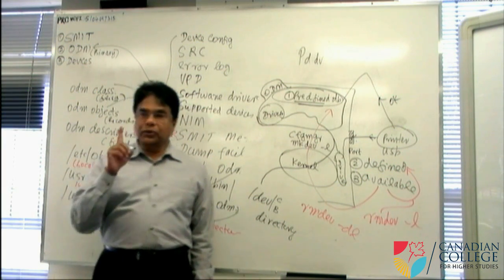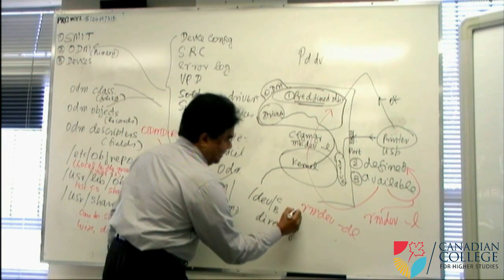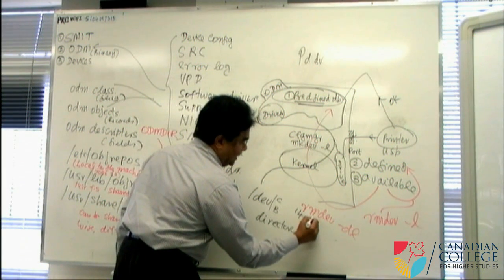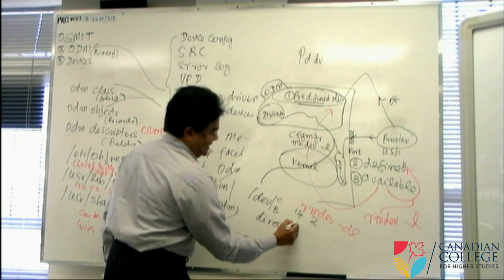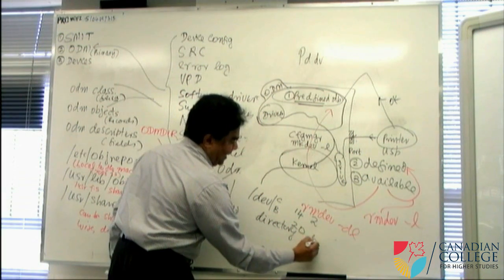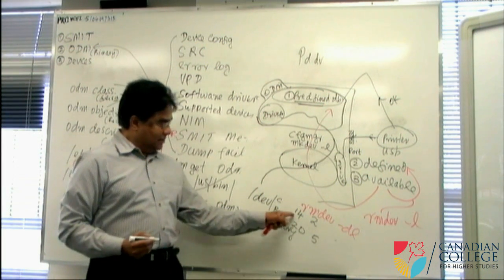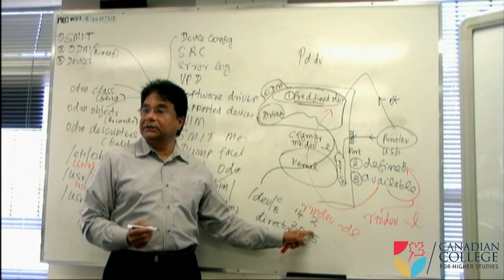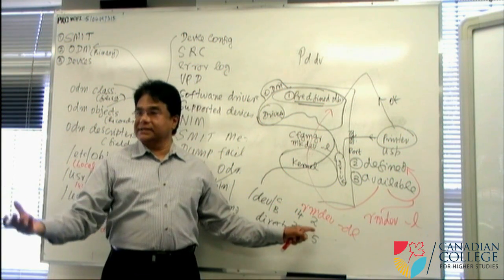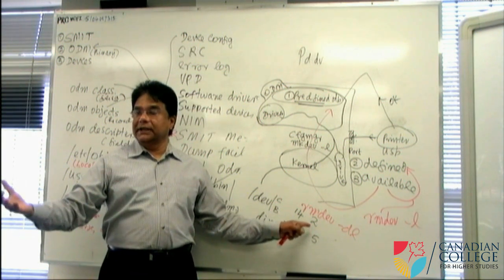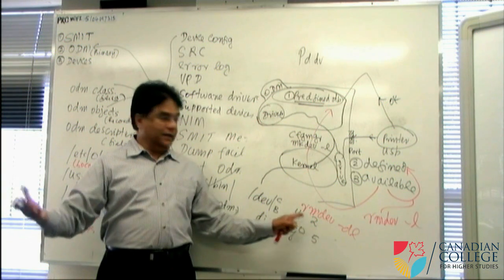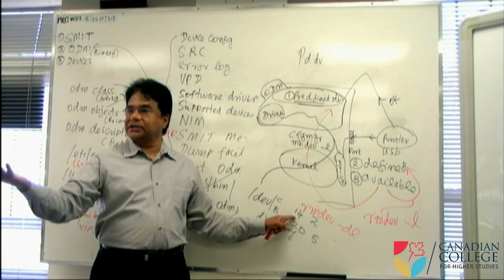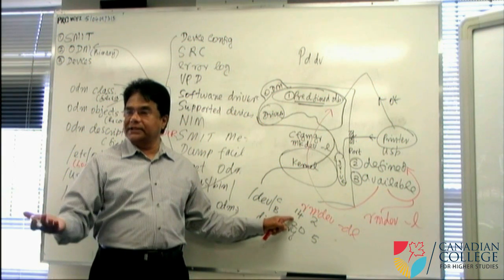You will also see two numbers — maybe a number 14 and then a number 2, or maybe 20 and 5. The first number is called the major number, and the second number is like an instance — how many times it has occurred. The major number is the driver. Software applications identify the driver by this major number.